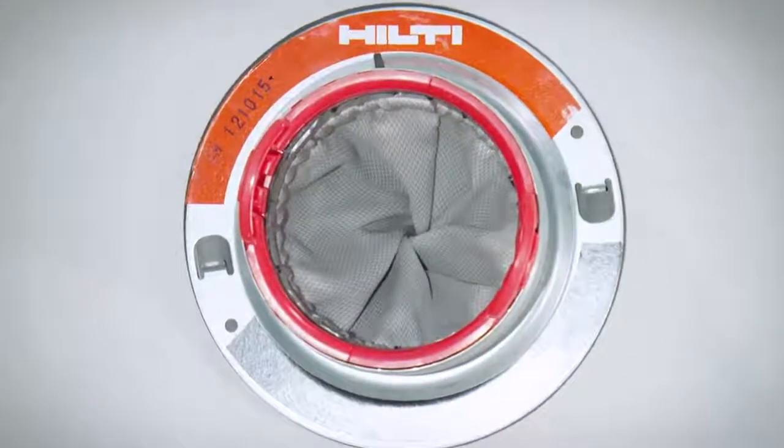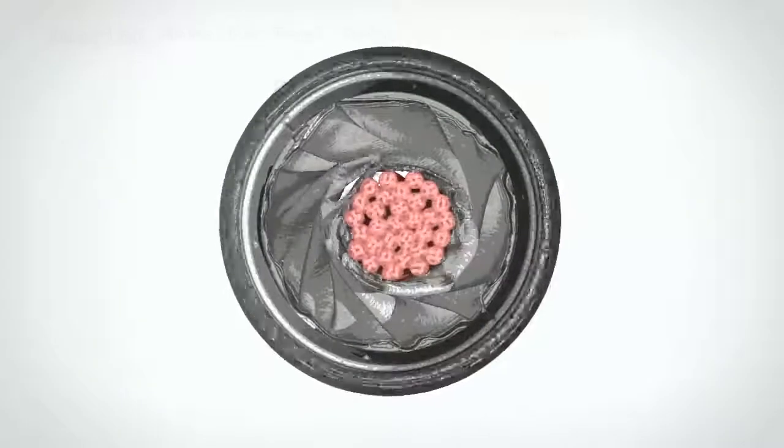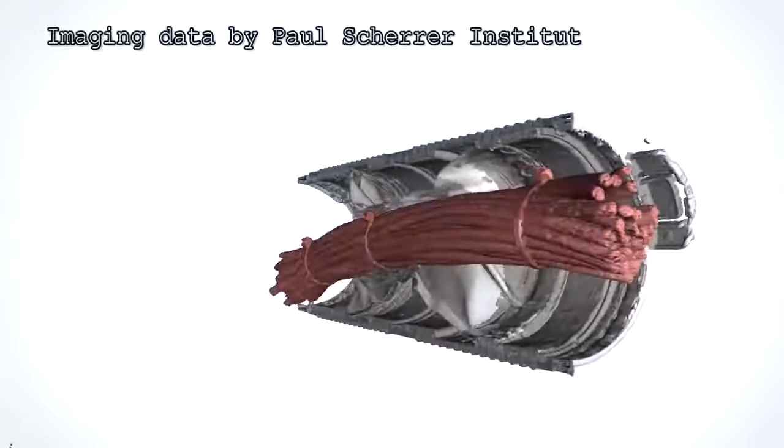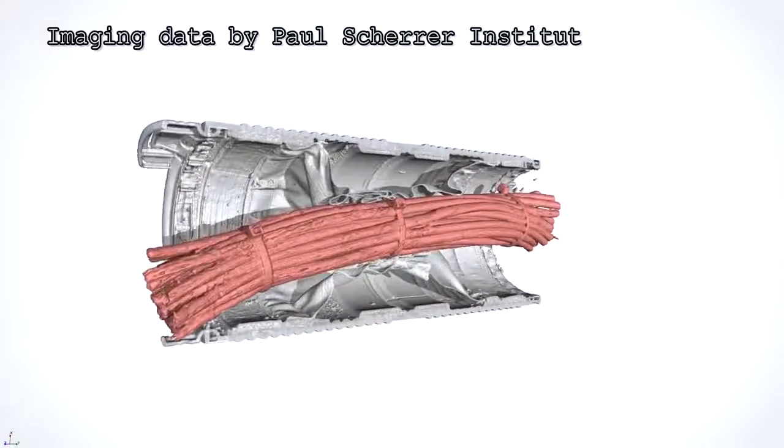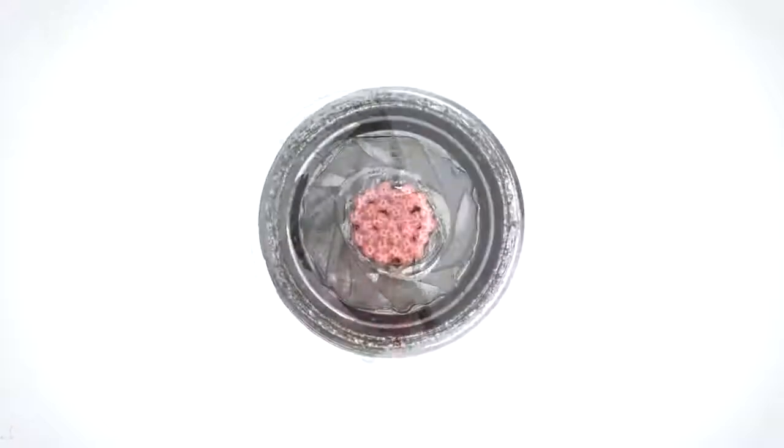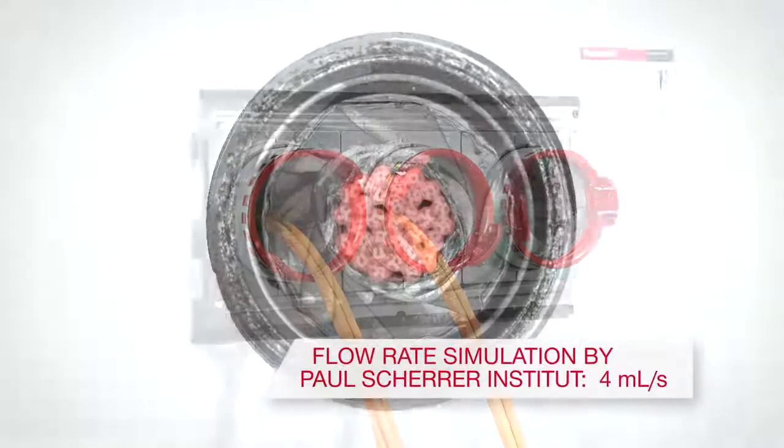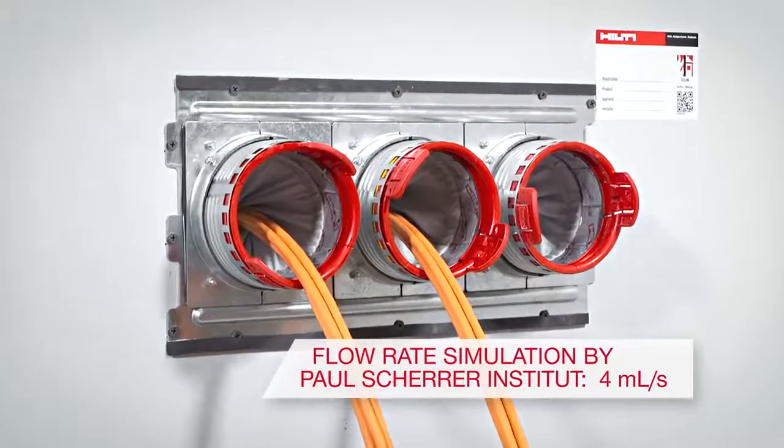Inside the speed sleeve, the inner fabric liner twists closed for a custom fit around the cables. Although not designed to hermetically seal openings, the Hilti speed sleeve virtually eliminates air leakage, even if you leave several devices empty to allow for future growth capacity.